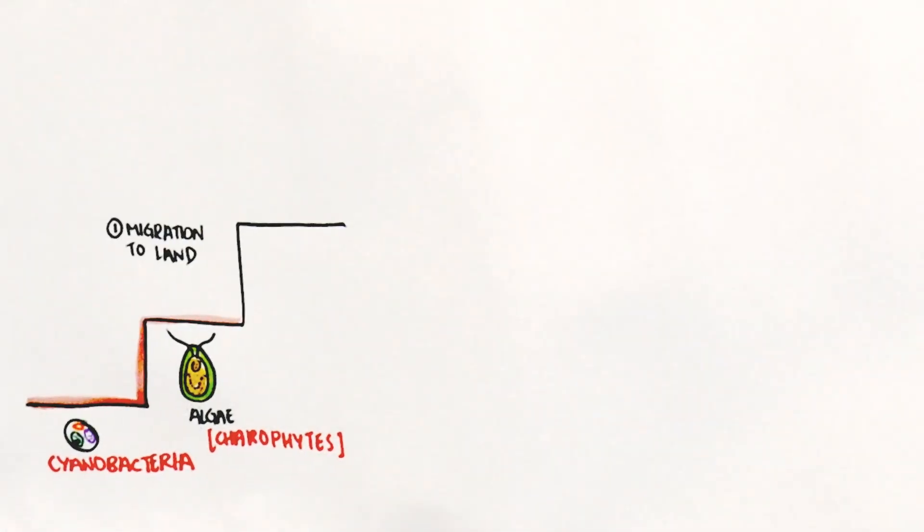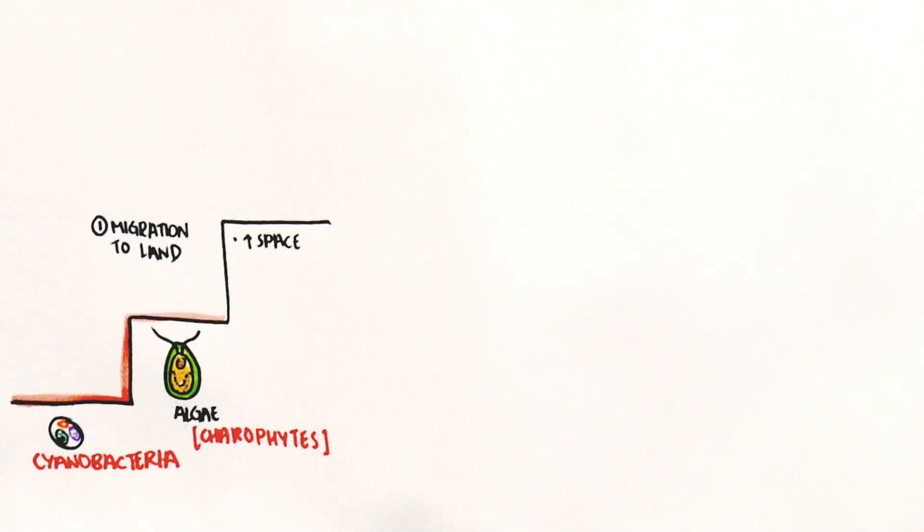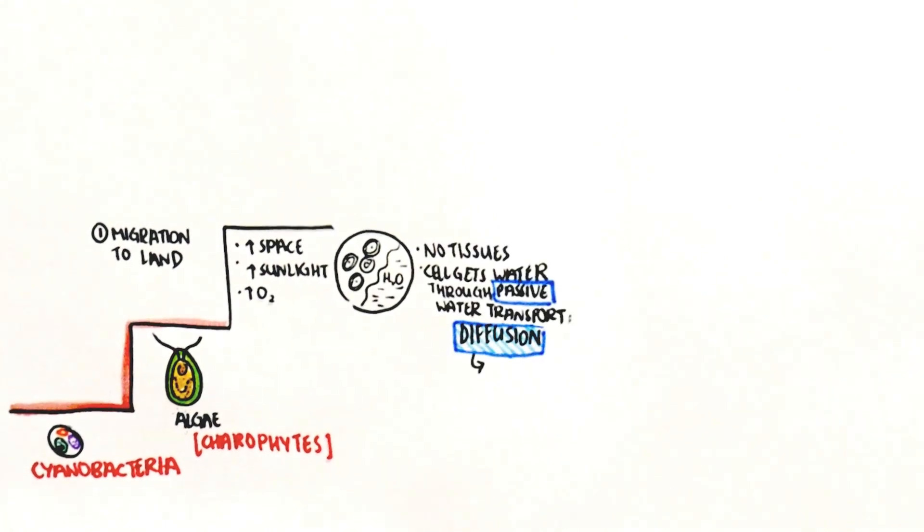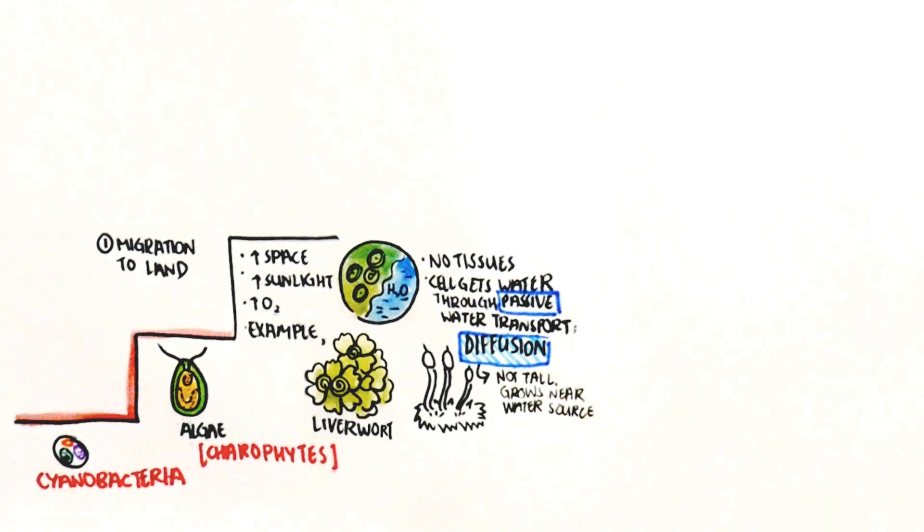Firstly, migration to land. Plants migrate to land to get more terrestrial space, more sunlight and oxygen. Hence, we move from charophytes to bryophytes, such as liverworts and mosses.